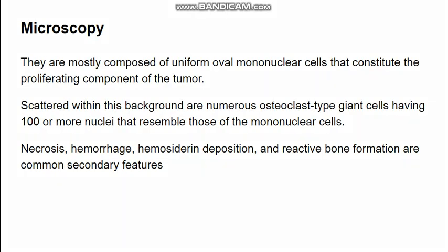In summary, microscopically there are oval mononuclear cells, which represent the proliferating and neoplastic component of the tumor. Scattered within this background are osteoclast-type giant cells with up to 100 or more nuclei. Secondary changes including necrosis, hemorrhage, reactive bone formation, and hemosiderin deposition can also be seen.